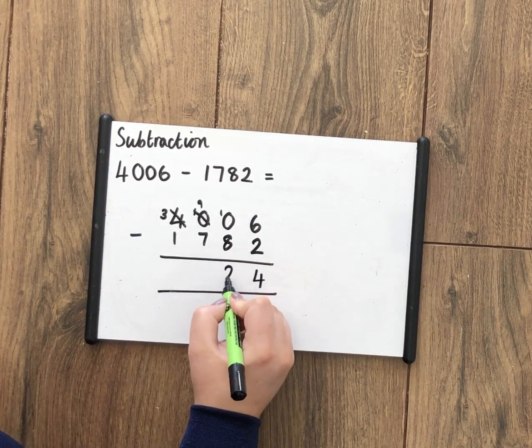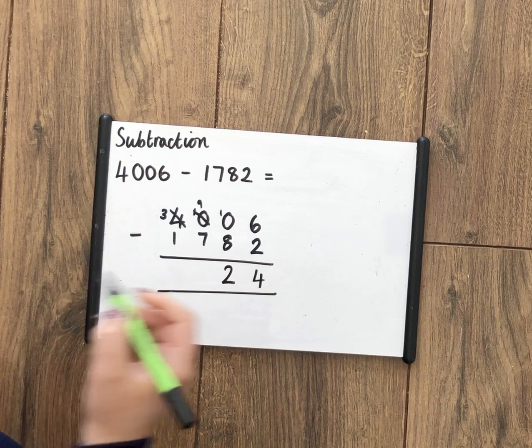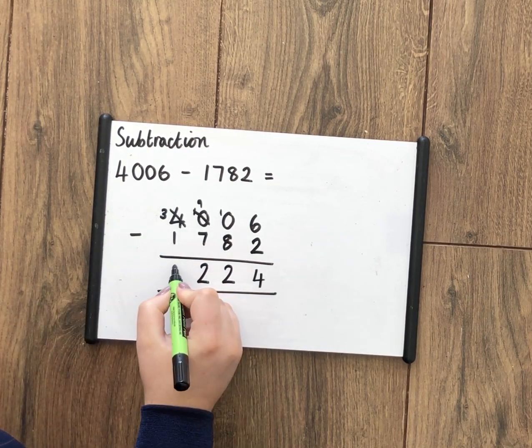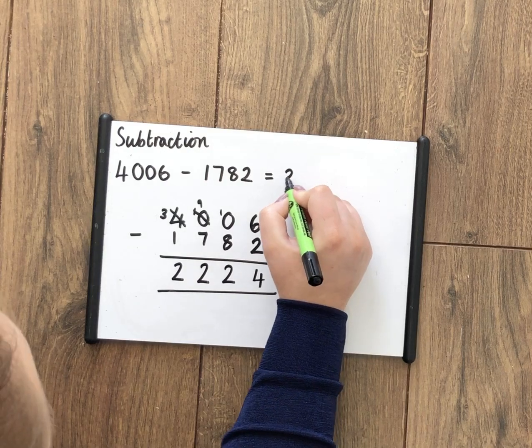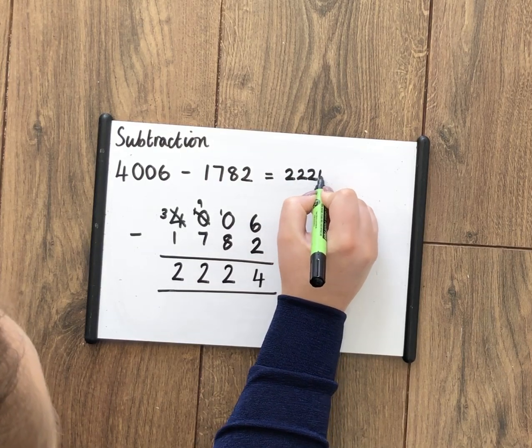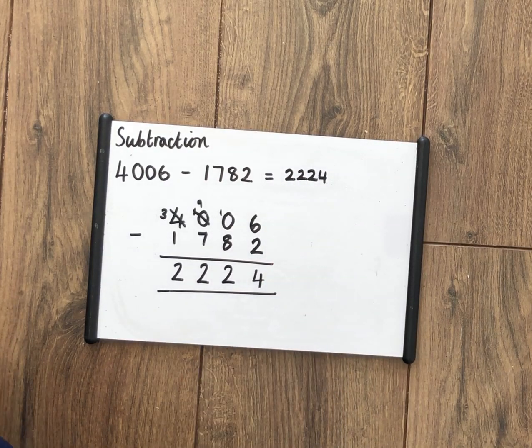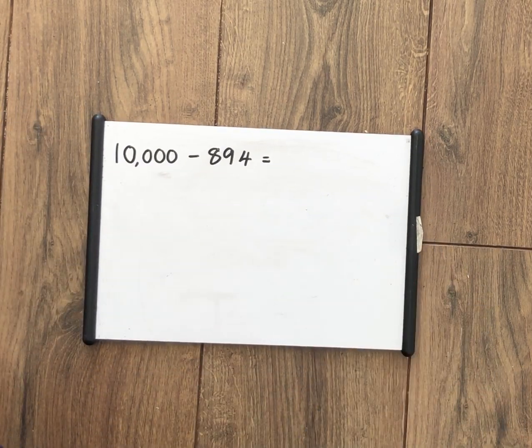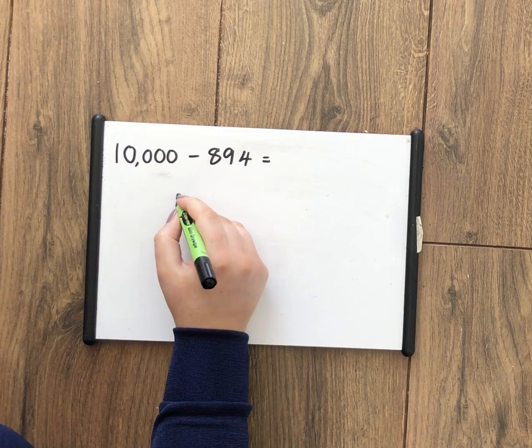So 10 take away 8 is 2, 9 take away 7 is 2, 3 take away 1 is 2. So my final answer is 2,224. Just another example with a similar process again.